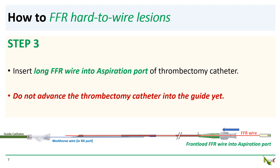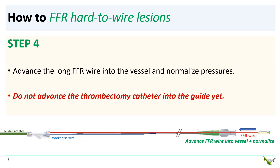Step three: take your long FFR wire and insert it into the aspiration port of the thrombectomy catheter. Now you have the FFR wire in the thrombectomy port and your workhorse wire in the RX port. Again, don't advance the thrombectomy catheter into the guide just yet. Step four: advance your long FFR wire into the proximal part of the vessel, proximal to the lesion, and then normalize pressures like you normally would.